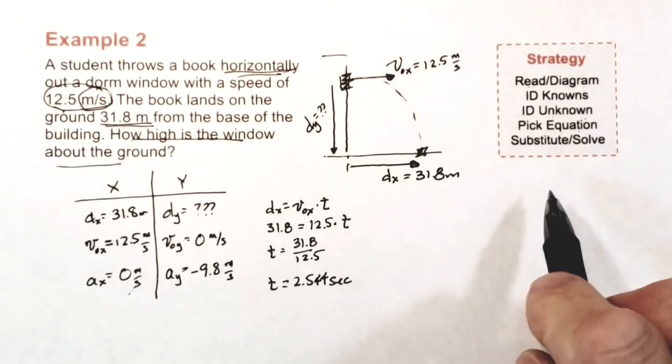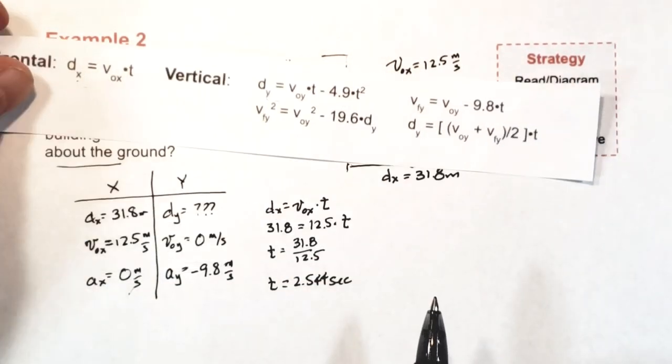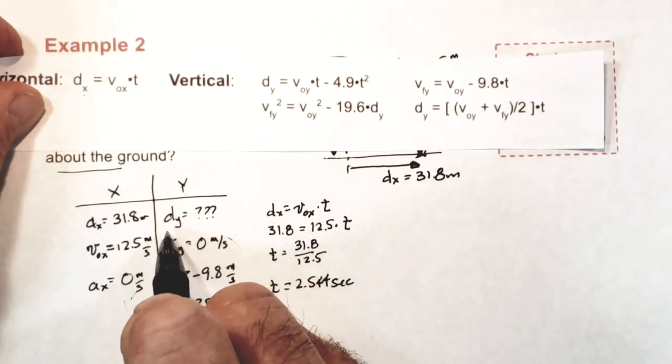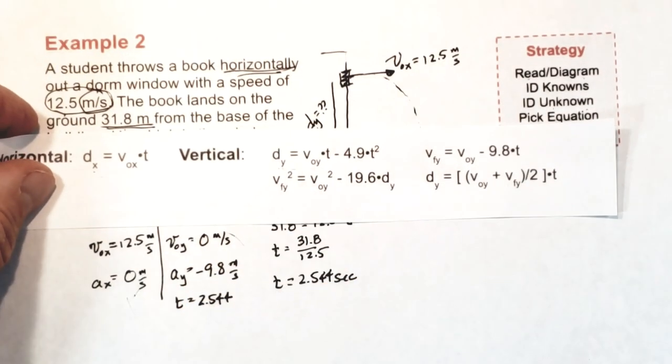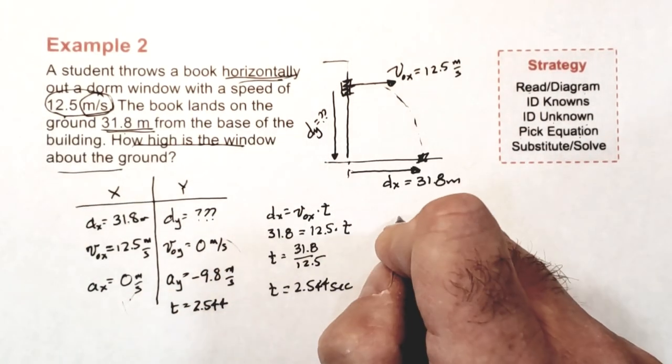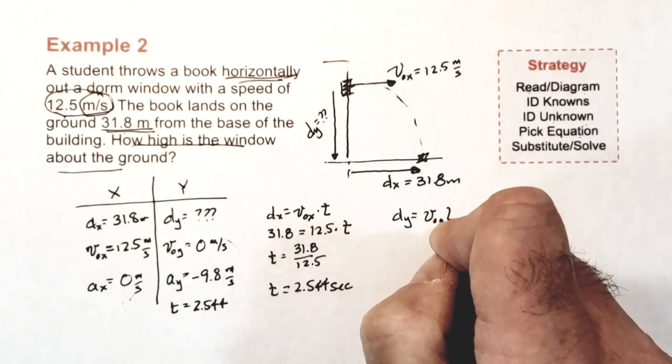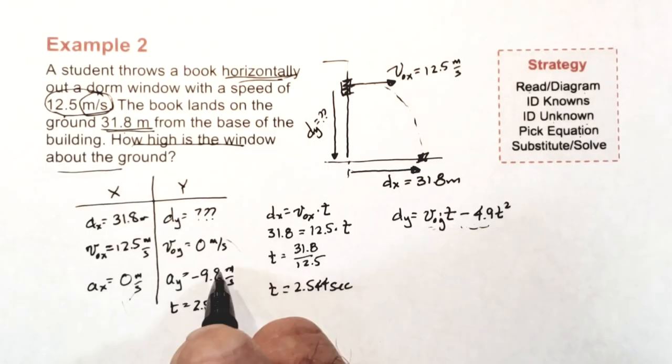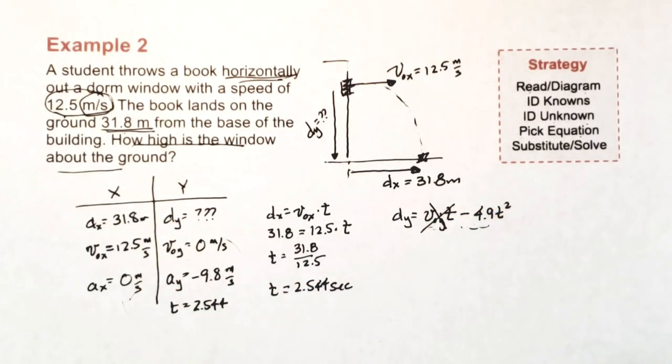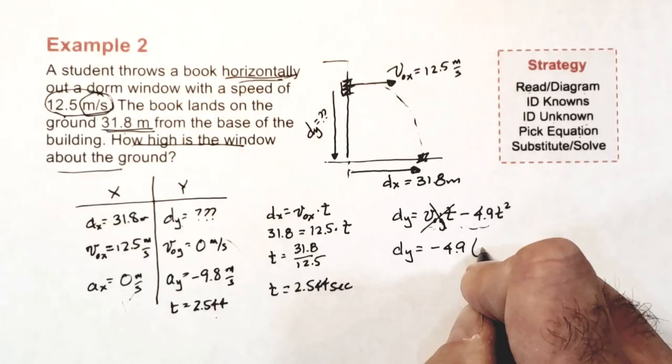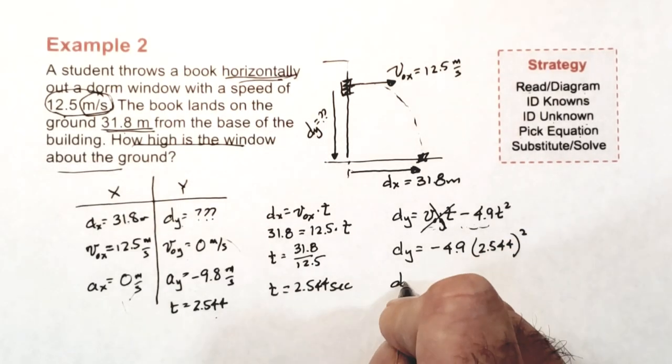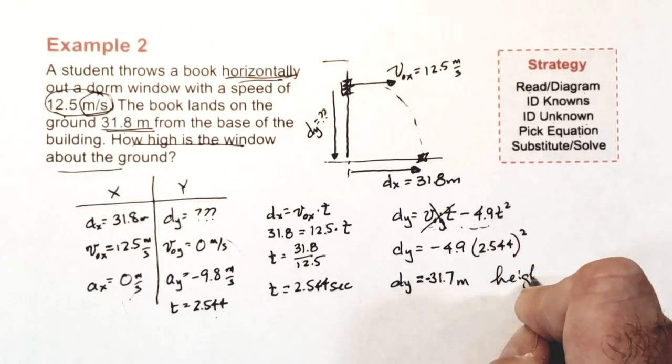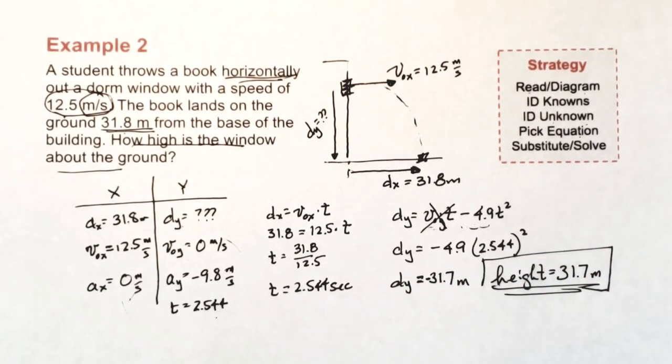Now I have to calculate DY. This time I've just calculated can be considered Y information. I have to use it along with the other two givens to calculate DY. I need the right formula. I look at my list, and I find the first formula top left is the one to use. The second term of this formula is simply 1 half AY T squared. The first term cancels because VOY is 0. Now I substitute the value of T into the equation, pull out my calculator, and I solve for DY. It's negative 31.7 meters. If the book falls 31.7 meters down, then the height of the window above the ground is 31.7 meters.